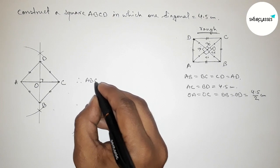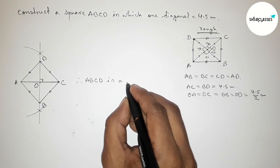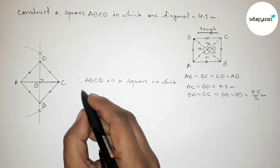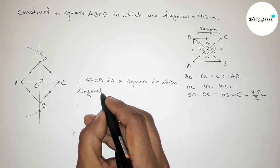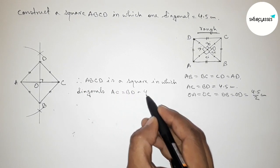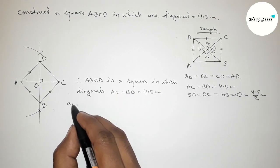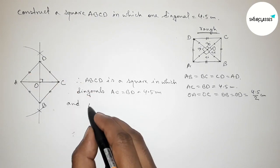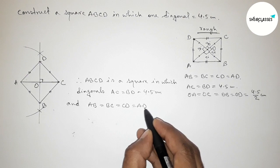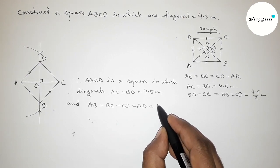Therefore, ABCD is a square in which the two diagonals AC and BD equals to 4.5 centimeter and the length of the side of the square equals to 3.2 centimeter approximately.